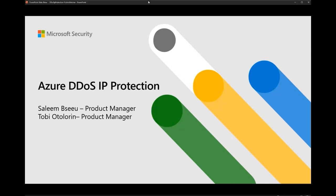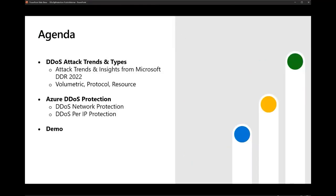Let's look at our agenda today. First, I'll start with DDoS attack trends and types, covering the trend published by the Microsoft Digital Defense Report for 2022. Then I'll go over the Azure DDoS Protection SKUs — network protection, which is the original one, and the per-IP SKU, which is the new one. Then Toby will walk through the demo: how to enable the new SKU on your public IPs, how to see and mitigate an attack, and how to look at the logs and reports.